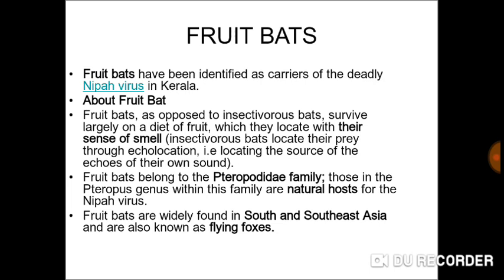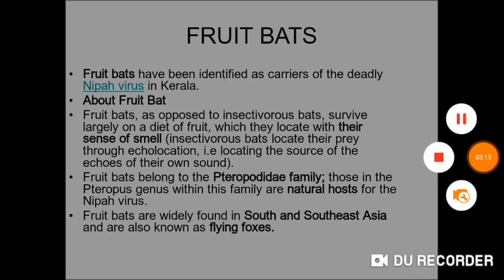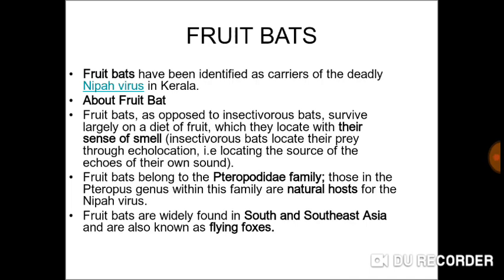Now, what we have read from NCERT and what our common sense says is that bats generally capture their prey with the help of ultrasonic waves. But the fruit bats are quite different from their counterparts — they locate their prey with the help of smell. It means the fruit bats generally find their food with the help of smelling.